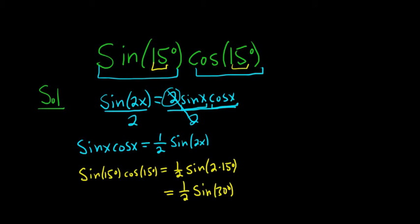And sine of 30 degrees is 1 half. That's just from memory. It's really important to have these values memorized. So 1 half times 1 half, and so the answer is just 1 fourth.